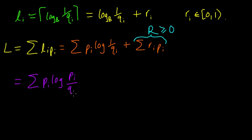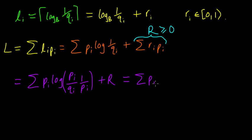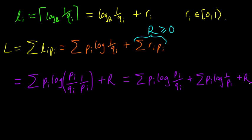We can multiply and divide by P_i inside the log: we have P_i times 1 over P_i, where the P_i's of course cancel. Then, breaking up the log of the product, we get a sum of P_i times log of P_i over Q_i, plus a sum of P_i times log of 1 over P_i, plus our rounding term R. This is what I was aiming for — I wanted to get something involving the entropy, and this second sum is exactly the entropy H(P).